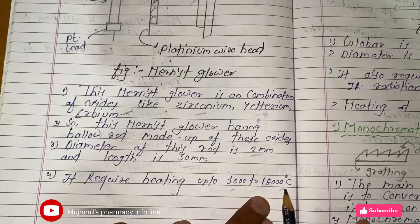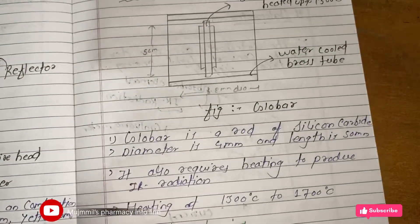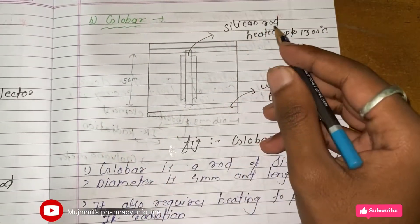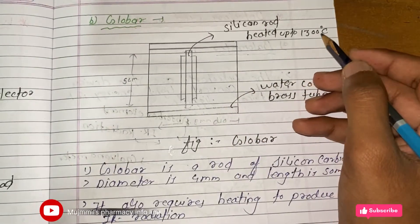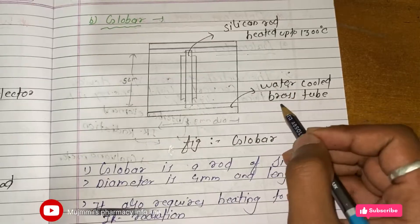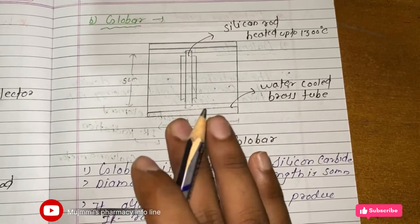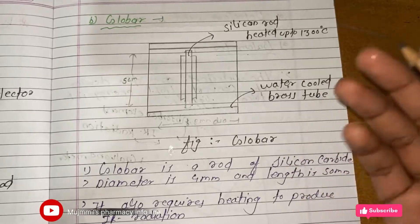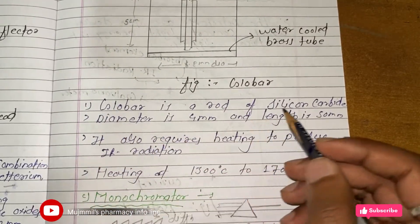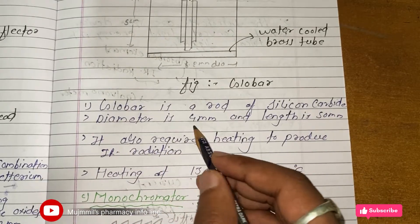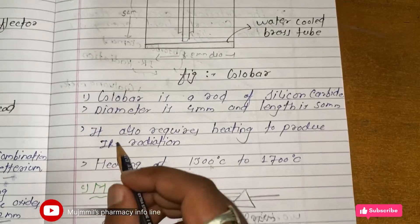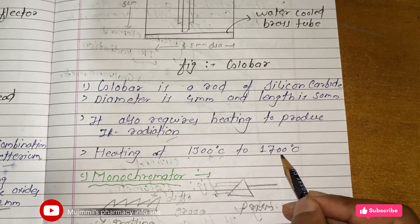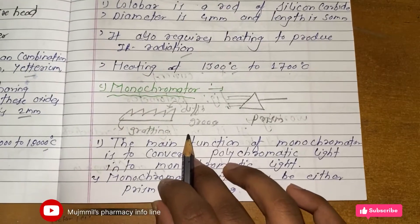The second radiation source is the Globar. It uses a silicon rod heated up to 1,300 degrees Celsius, and has a water-cooled brass tube. In exams, you must draw these diagrams for your radiation sources and detectors. The Globar is a rod of silicon carbide with a diameter of 4 mm and a length of 50 mm. It requires heating to 1,300 to 1,700 degrees Celsius to produce IR radiation.